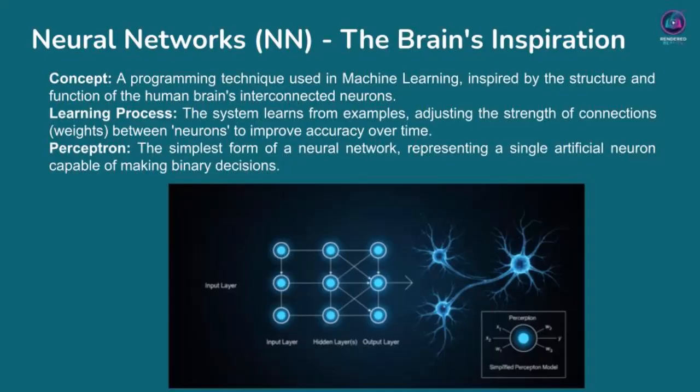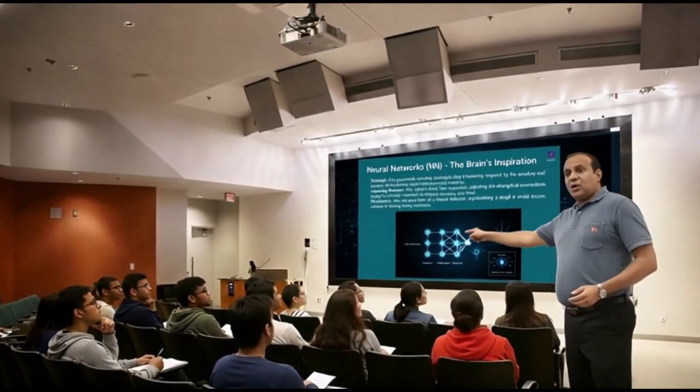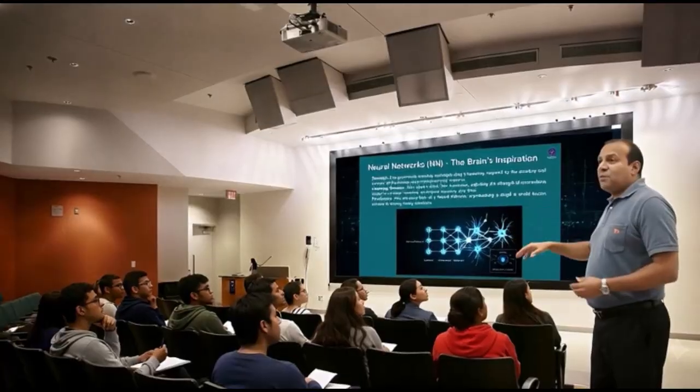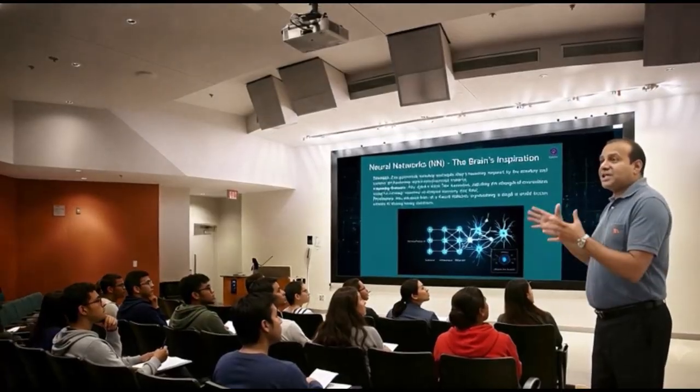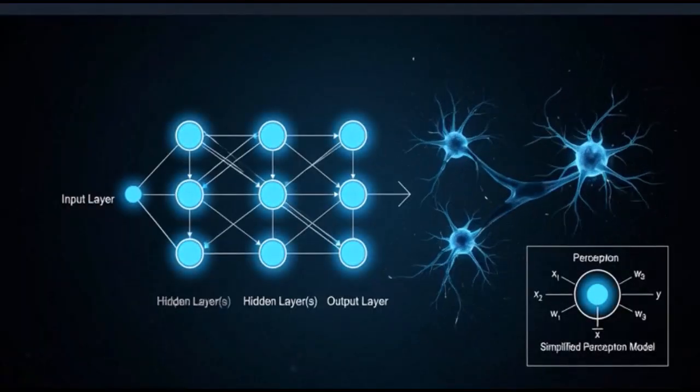They're inspired by the biological structure and function of the human brain. Just as our brains are made up of billions of interconnected neurons that send and receive signals, an artificial neural network consists of interconnected nodes, often called neurons, that process and transmit information.